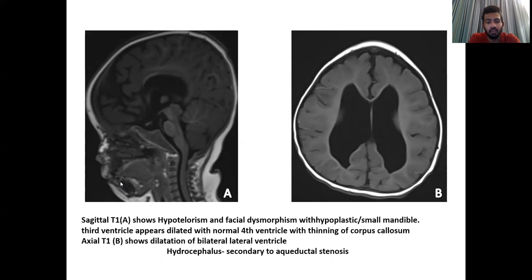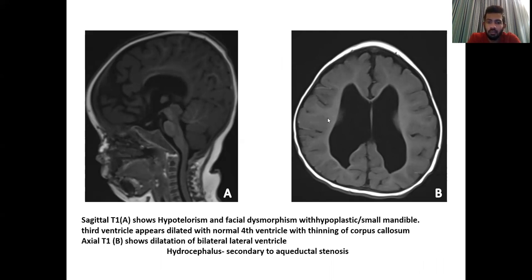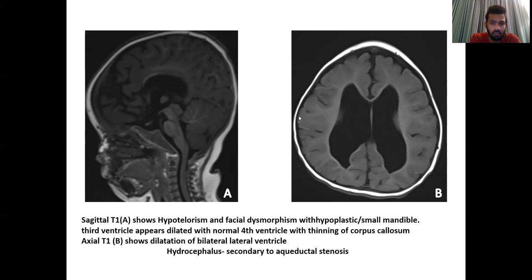The sagittal T1-weighted image shows hypertelorism and facial dysmorphism with a hypoplastic small mandible, and the third ventricle appears dilated with a normal-appearing fourth ventricle and thinning of the corpus callosum. The T1 axial image shows dilatation of the bilateral lateral ventricles. This is a case of hydrocephalus secondary to aqueductal stenosis.